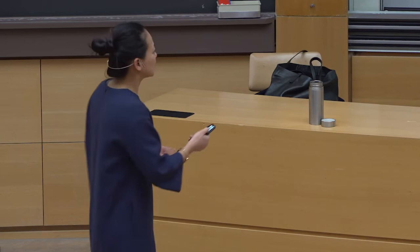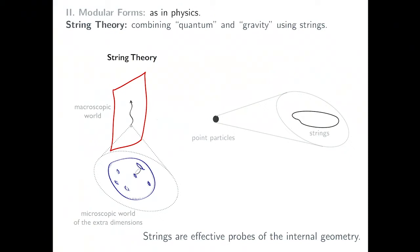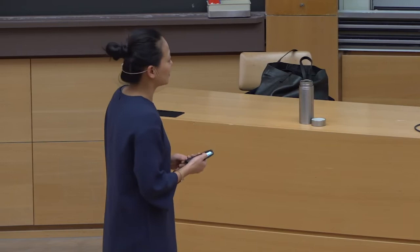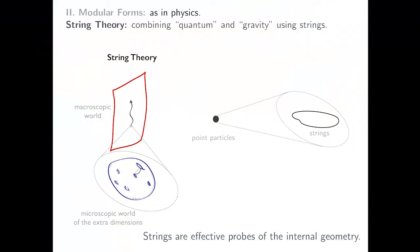String theory's answer to the extra dimensions challenge is that we have three-plus-one large dimensions we can see with our naked eyes, and the rest of the dimensions are curled up in tiny invisible compact dimensions. For me it is certainly a blessing as someone interested in mathematics, because strings are very effective probes of these internal tiny manifolds. Through what we call compactification, string theory has led to new questions and new tools in the field of enumerative geometry.